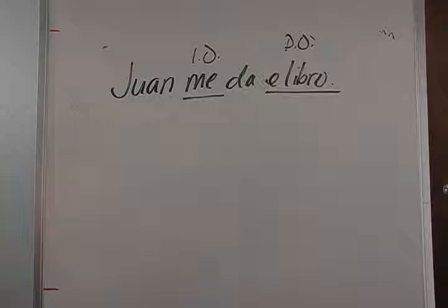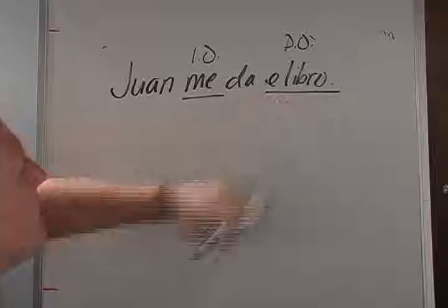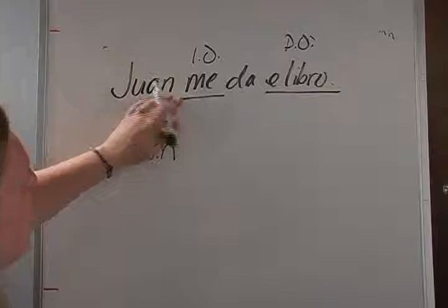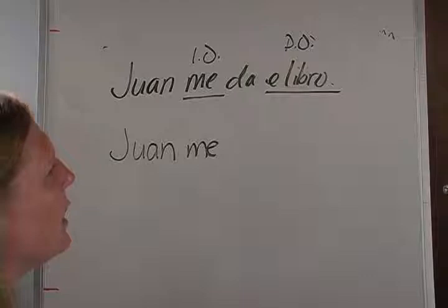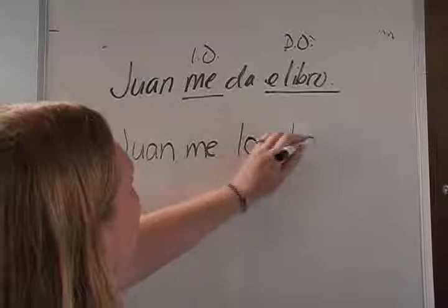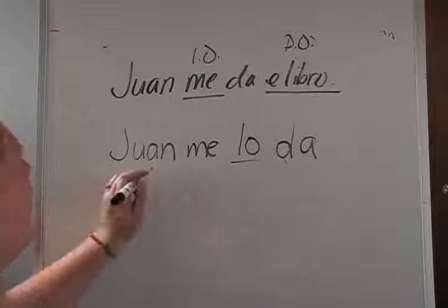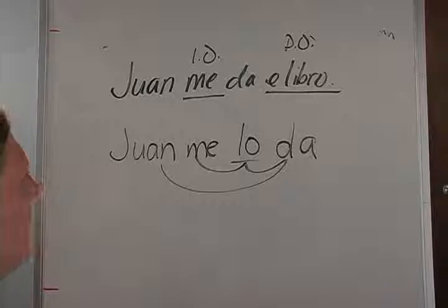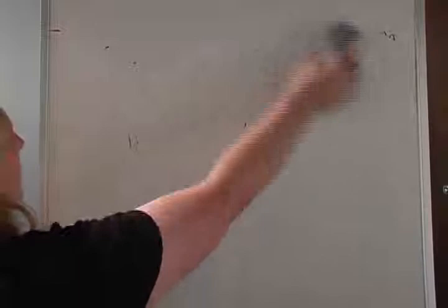Your indirect is always going to come first, your direct is going to come second. So we're going to have Juan. Your indirect object pronoun is me. Your direct — el libro — you have to look at your direct object and see if it's singular or plural. El libro is singular, so it's going to be Juan me lo da. Lo is replacing el libro. The way you would read this is: Juan gives it to me.